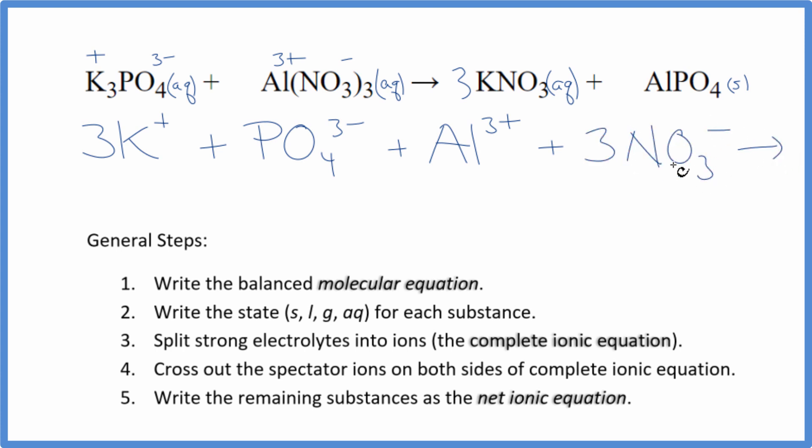Those are the reactants in our net ionic equation. For the products, we have plus and minus here. So three potassium ions, just like in the reactants. And three nitrate ions, also like the reactants. And then we do not split solids apart in net ionic equations. So we just have the AlPO4, aluminum phosphate. This is the complete ionic equation.